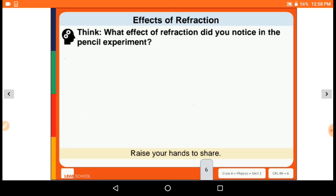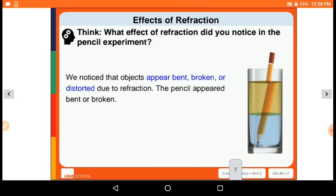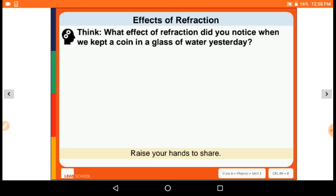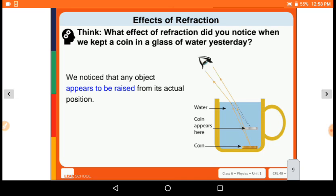What effect of refraction did you notice in the pencil experiment? We noticed that the object appears bent or distorted due to refraction. The pencil appears bent or broken. What effect of refraction did you notice when we kept a coin in a glass of water yesterday? We noticed that an object appears raised from the actual position.